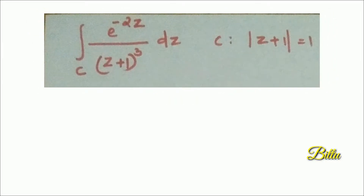Next, let me evaluate a few complex integrals using Cauchy's Integral Formula for derivatives. Consider the integral over C of e^(−2z) by (z+1)³ dz, where C is a circle with center −1 and radius 1. The given function is e^(−2z) by (z+1)³, and the singular point is −1.